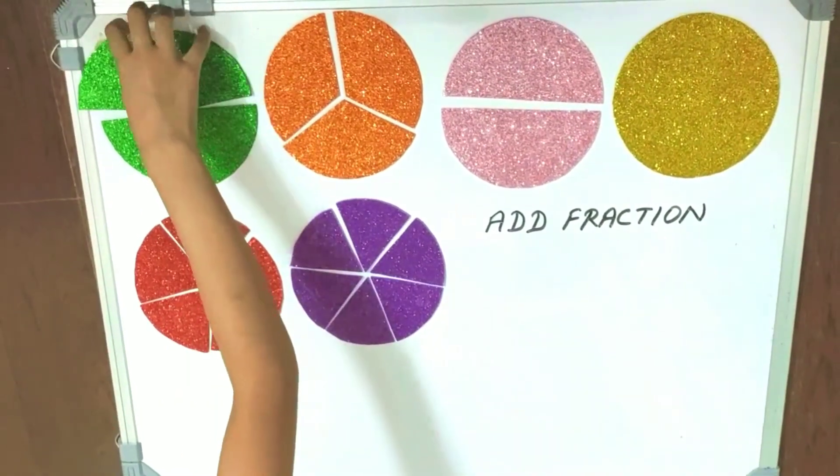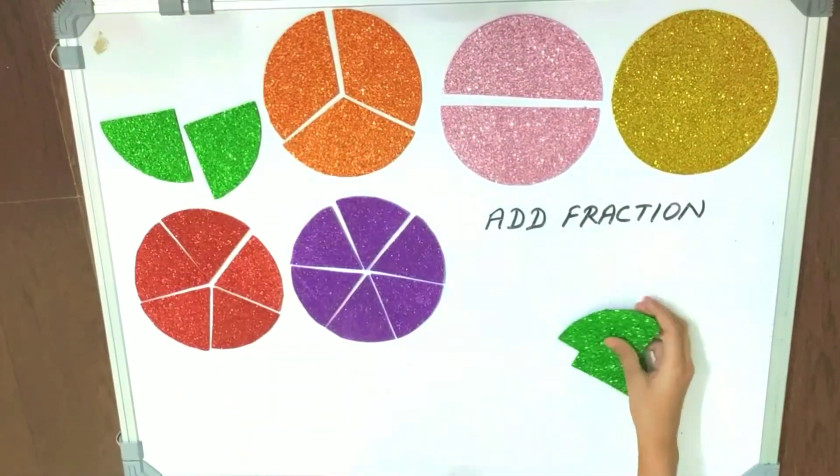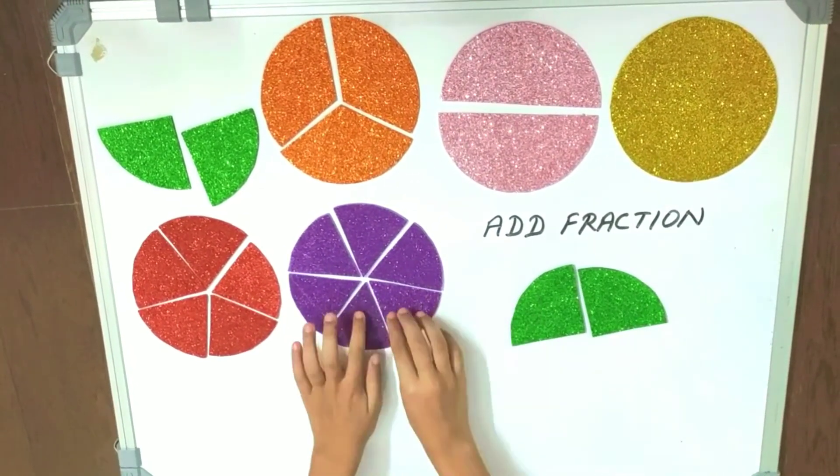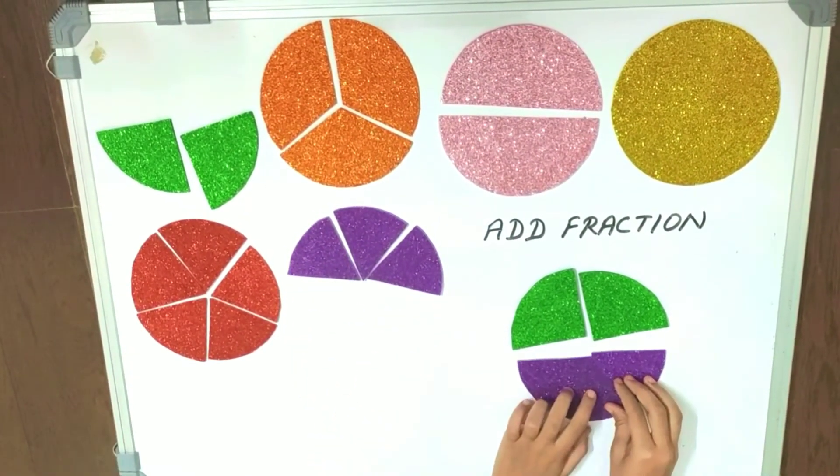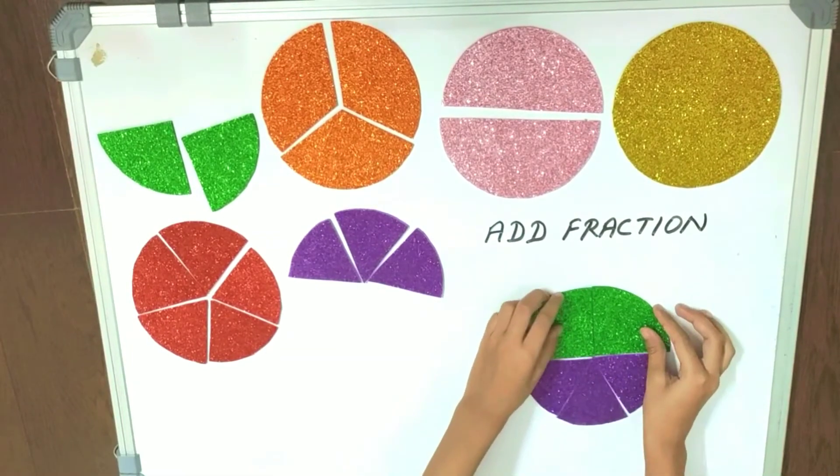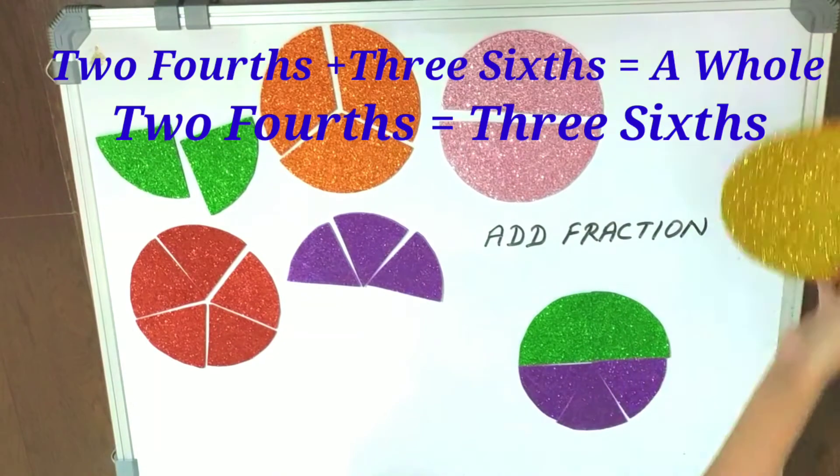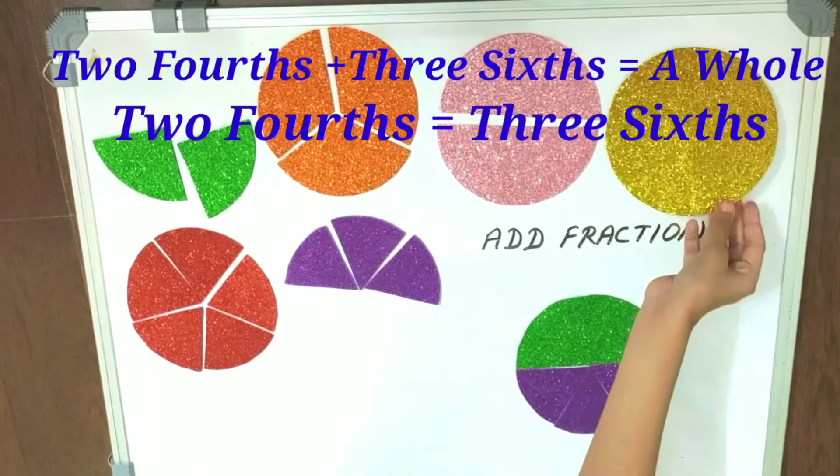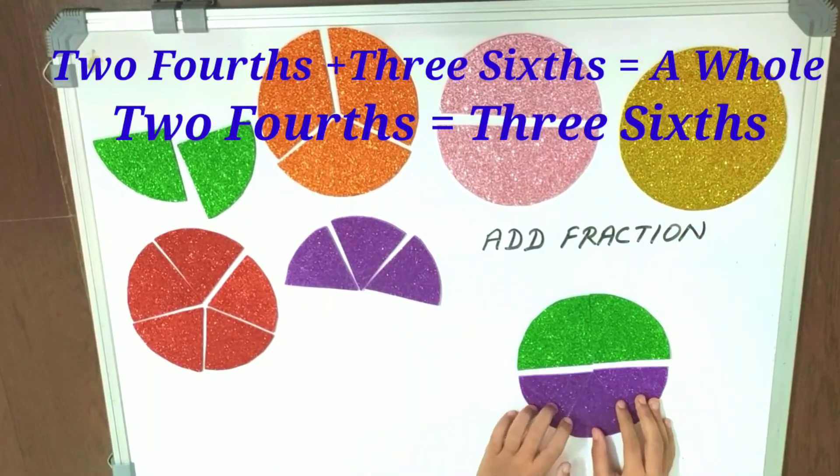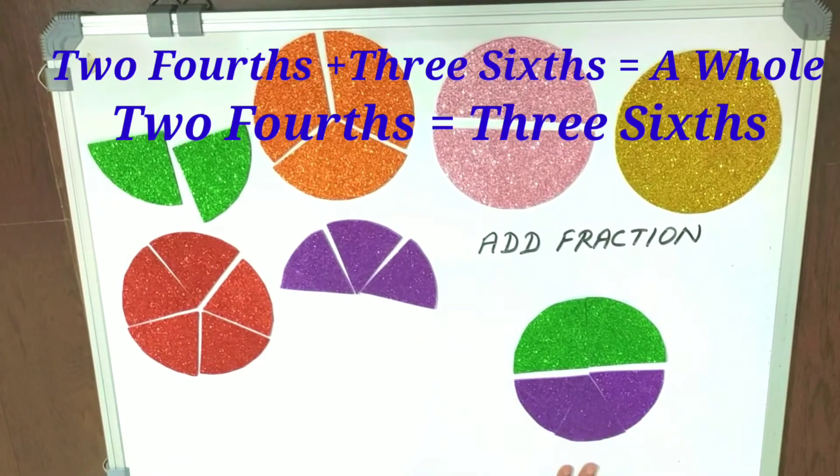If I pick two fourths and three sixths, then we join them. We can say that they are a whole circle, and we can easily say that they are equal.